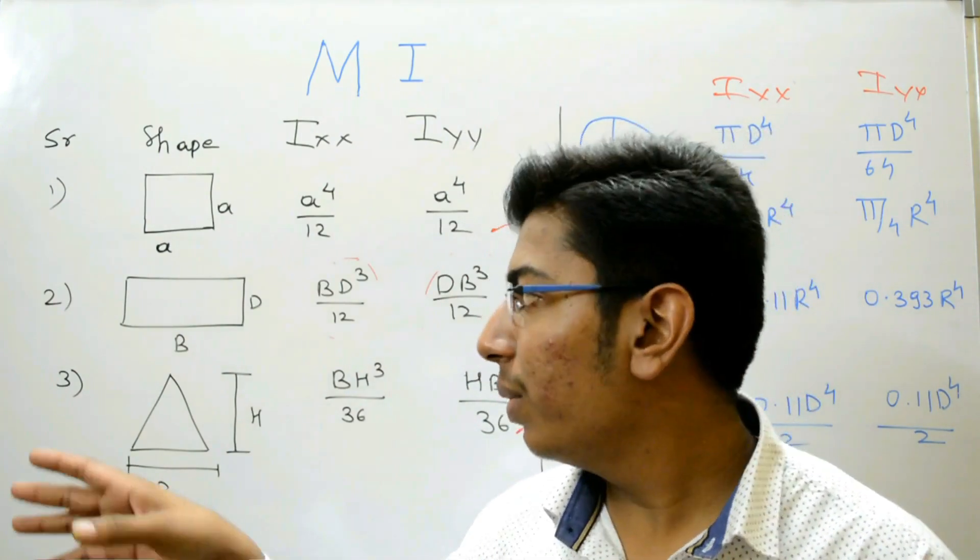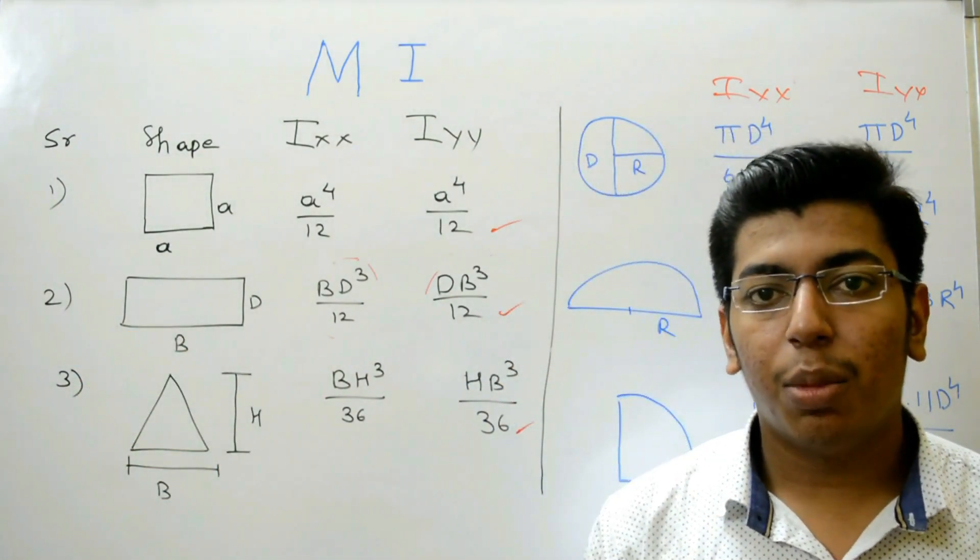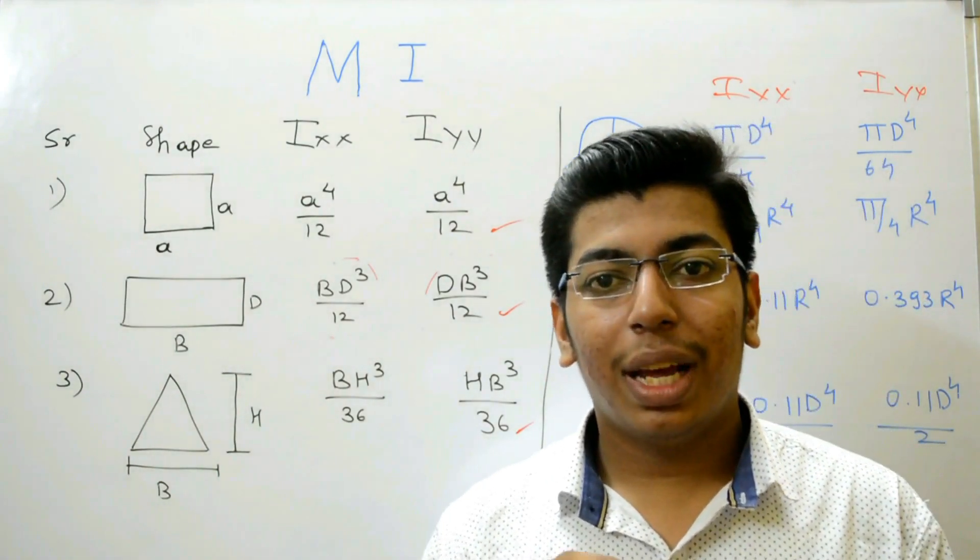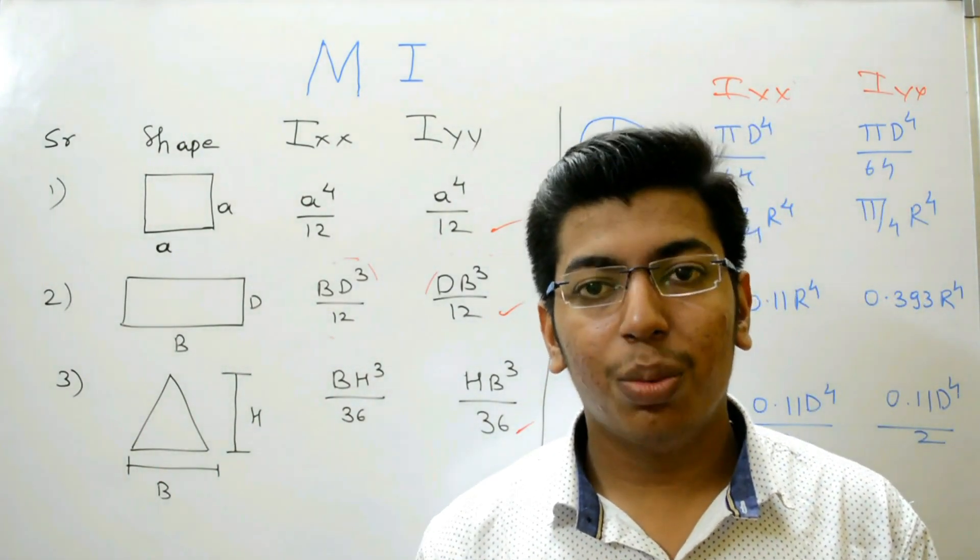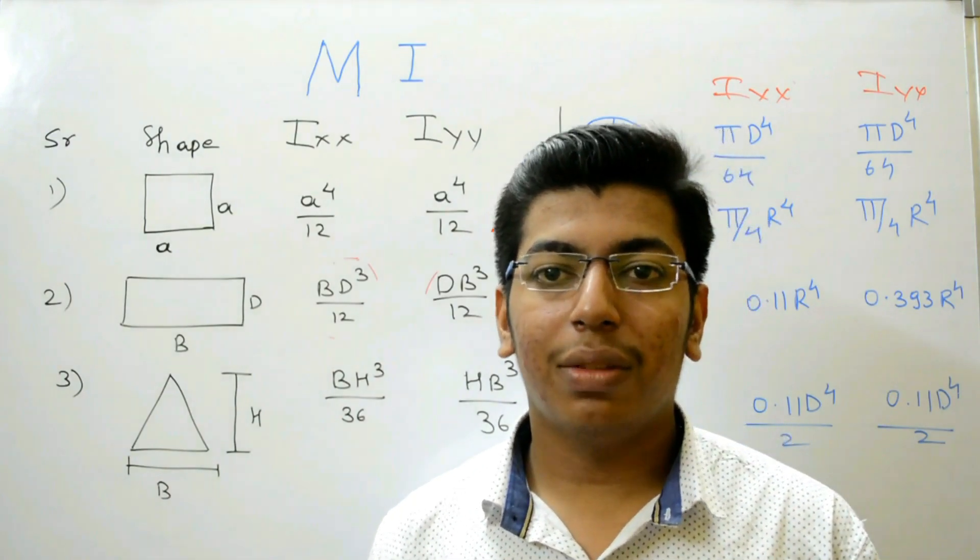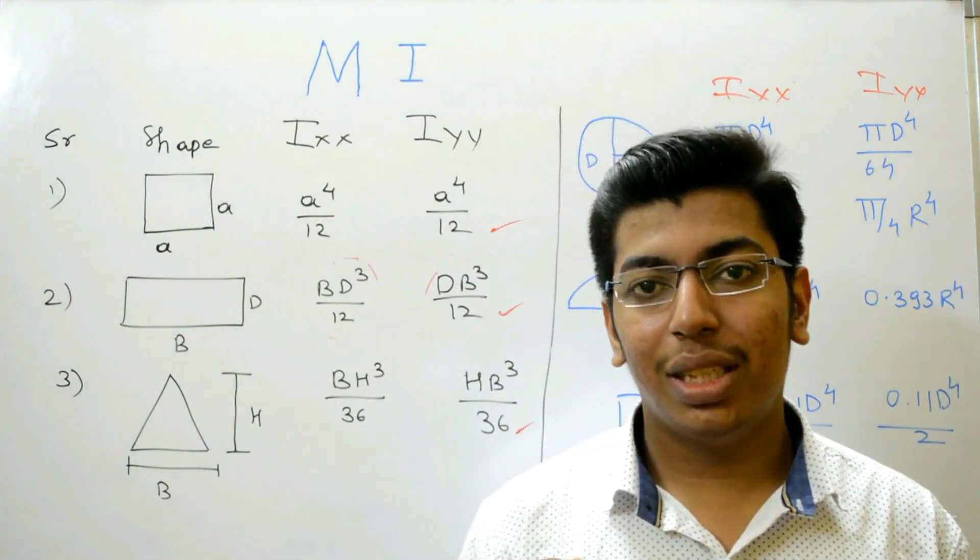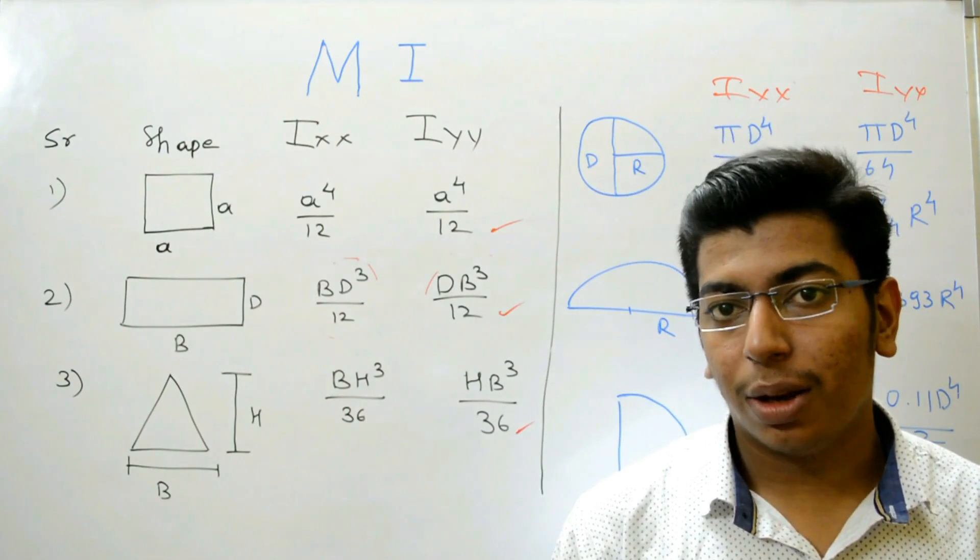Then the next shape is rectangle. The moment of inertia about x-axis is B D cubed upon 12 and the moment of inertia along y-axis is D B cubed upon 12.